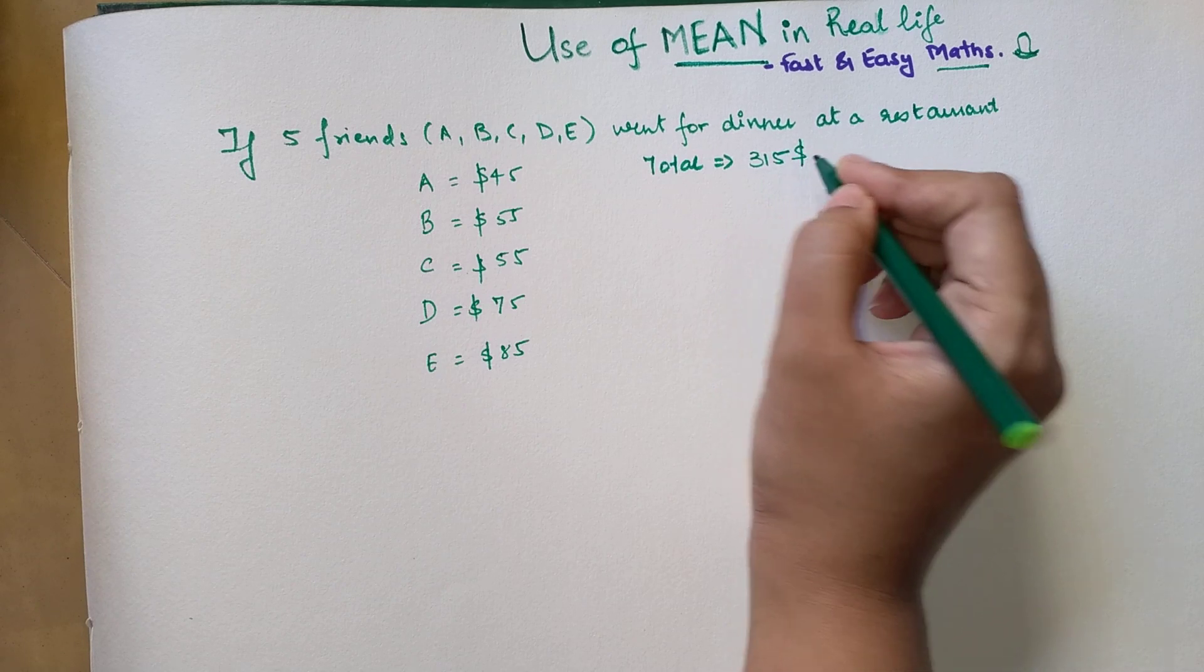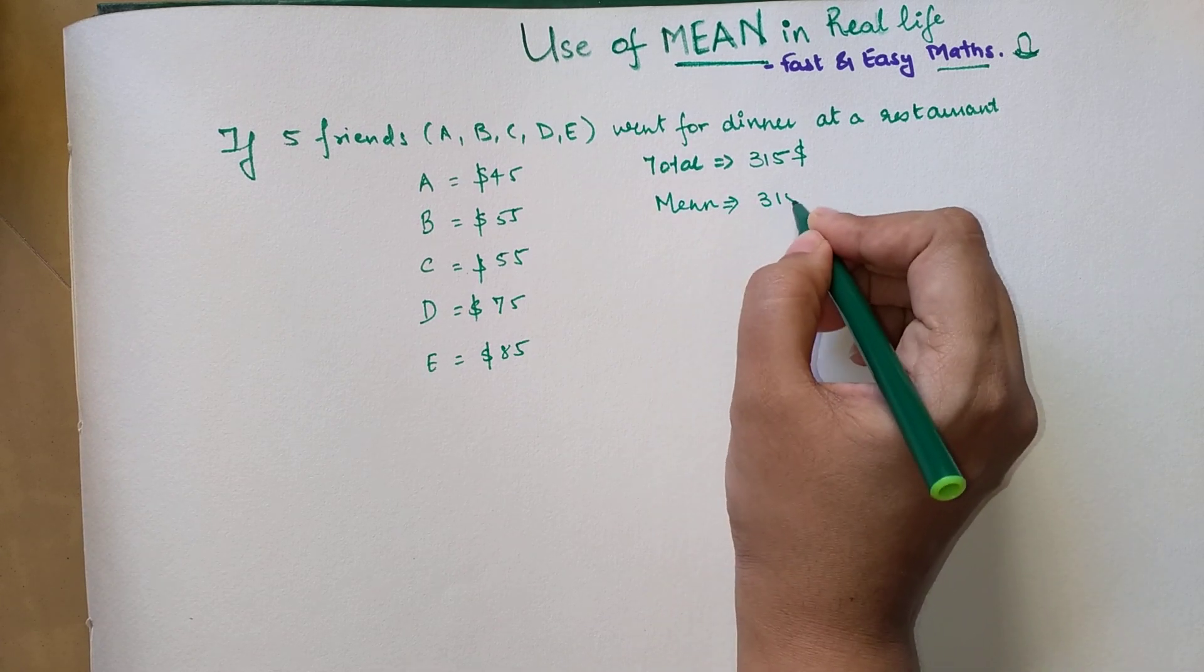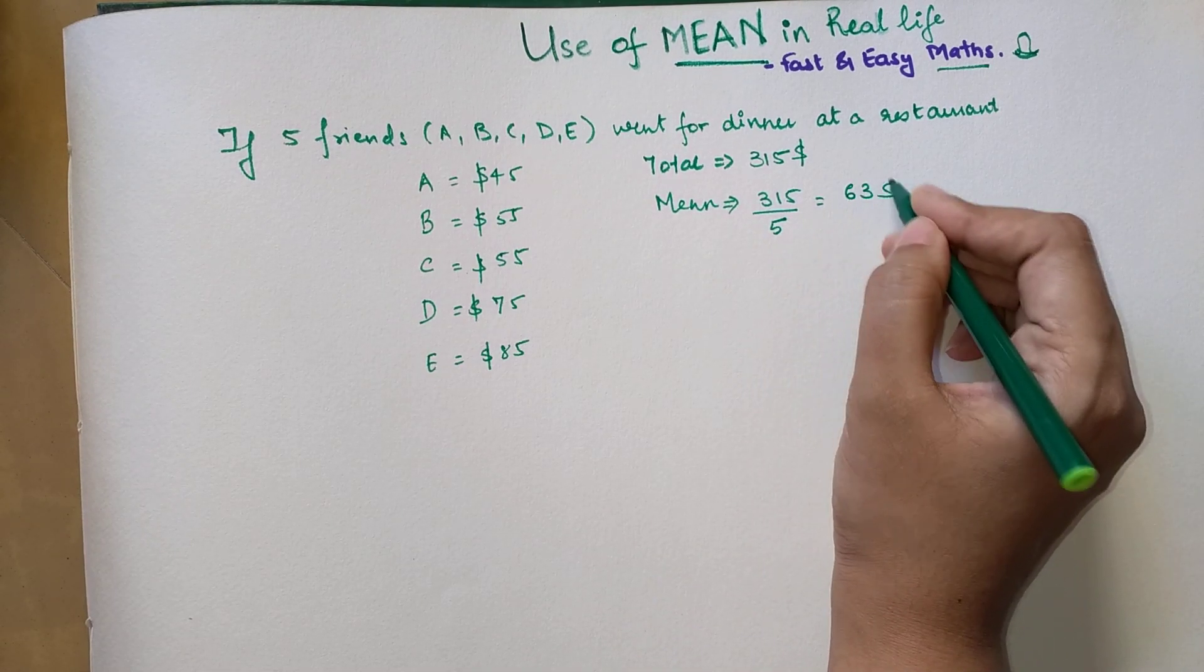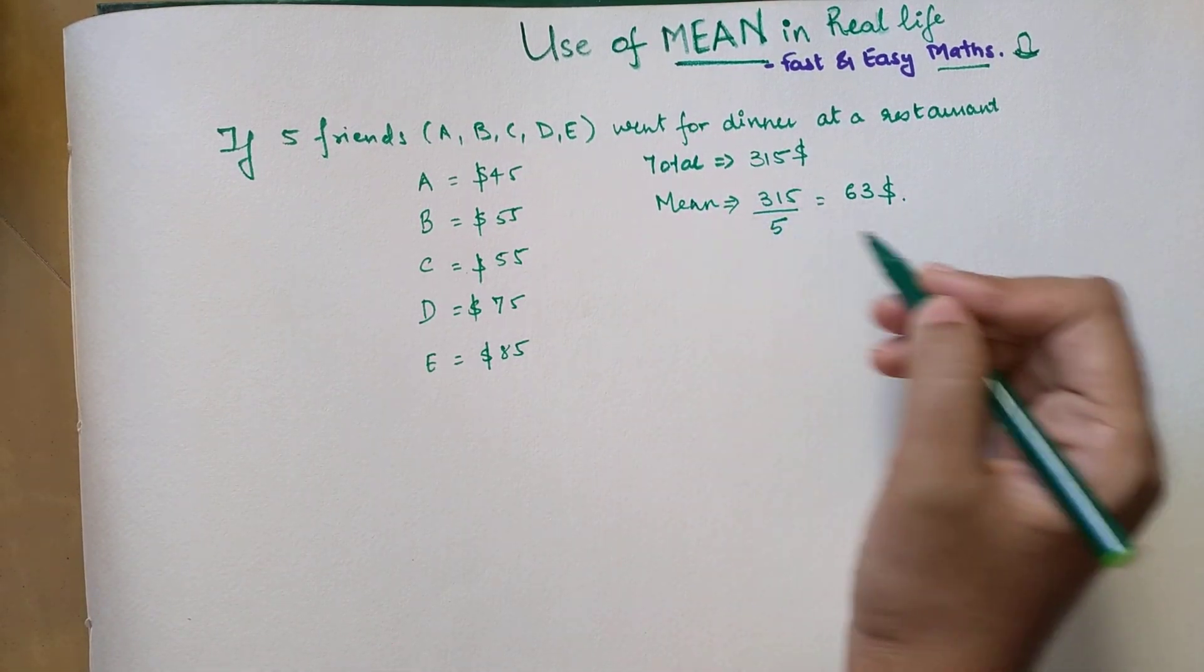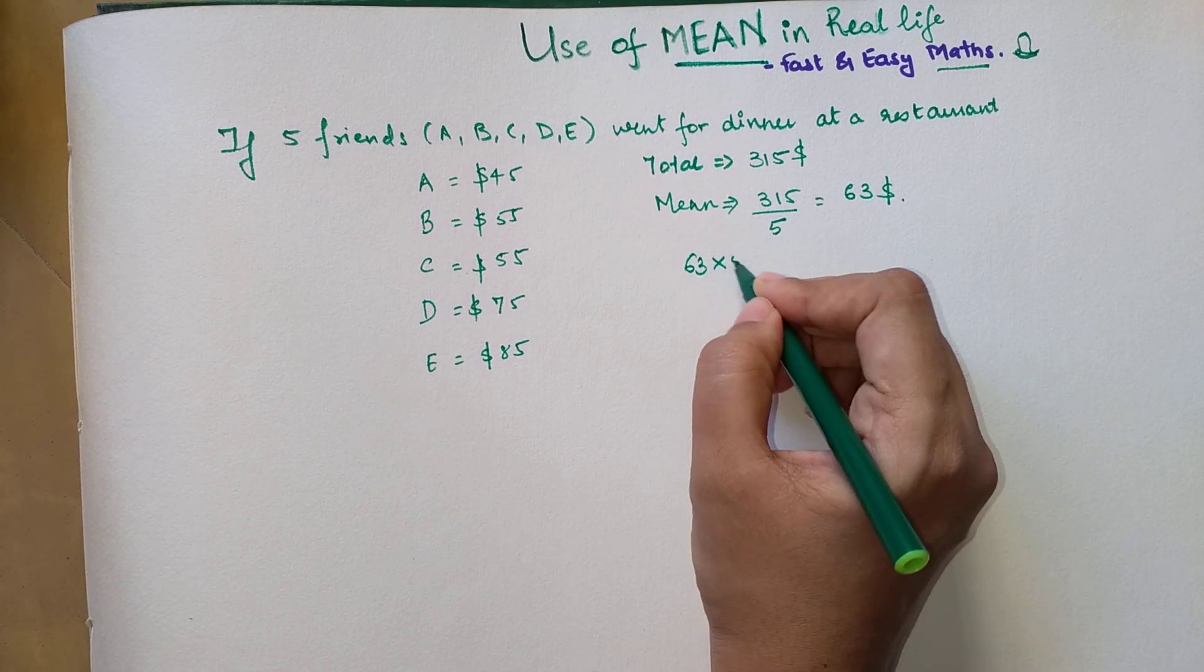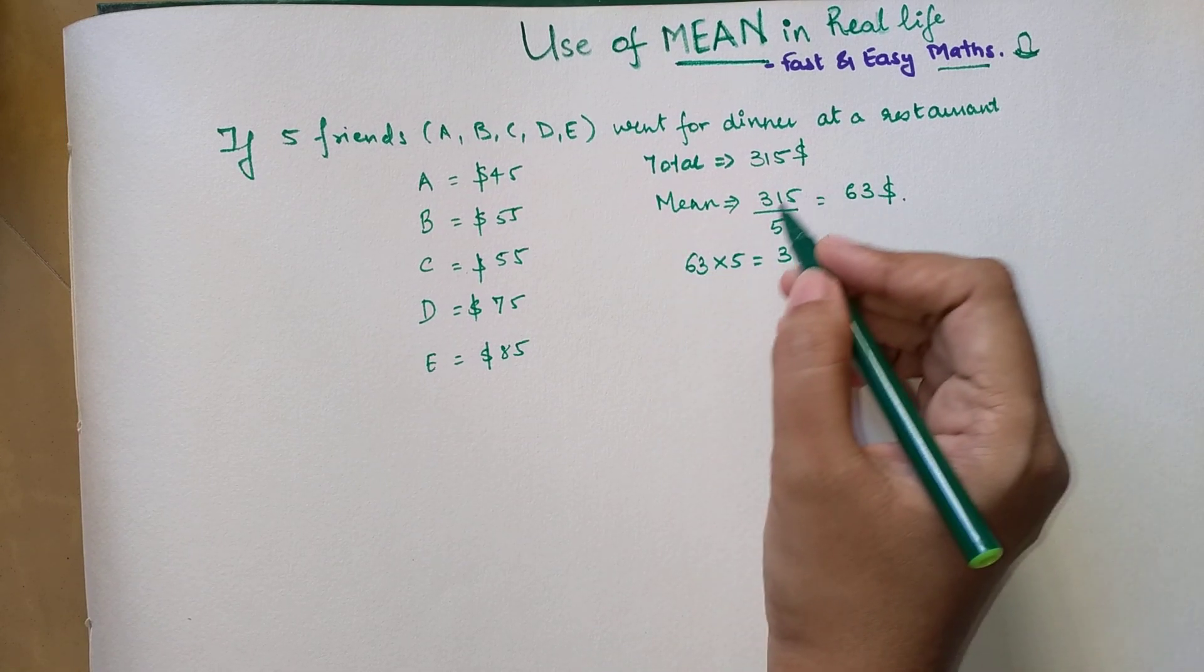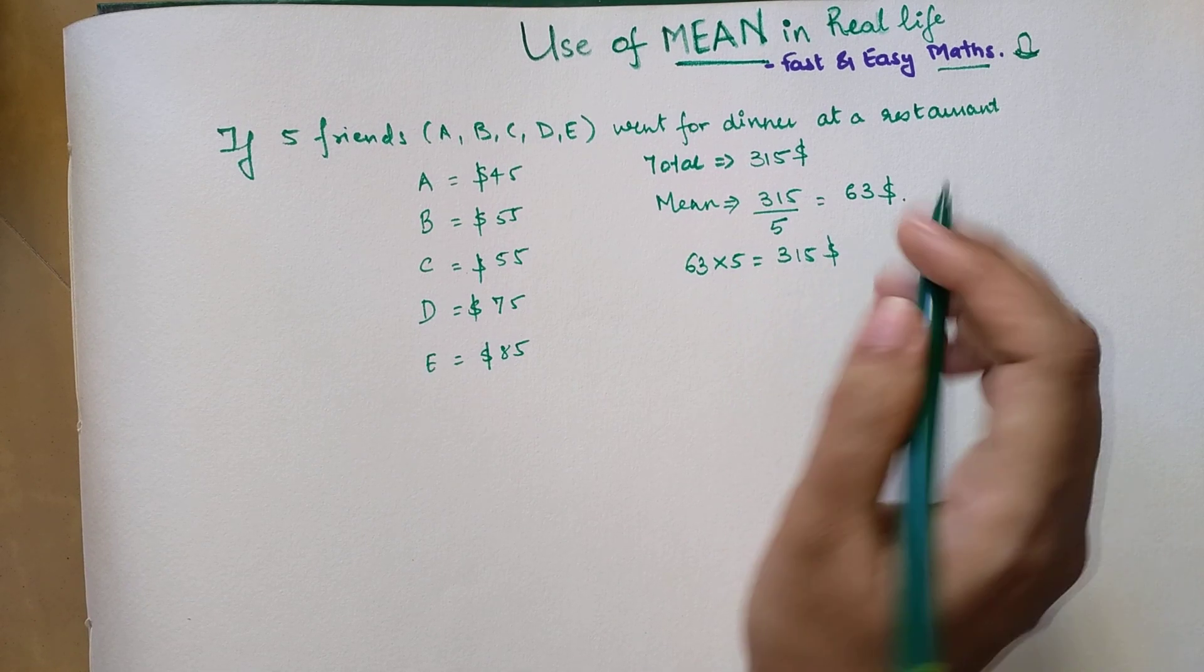The total of the bill was $315. So your mean would be dividing 315 by how many people - 1, 2, 3, 4, and 5. That equals $63. If they calculated the mean, each one will pay $63. Let's cross verify: when you multiply 63 by 5, you actually come to your bill which is $315. So when they did a mean calculation and everybody paid that amount, the bill was completely paid.